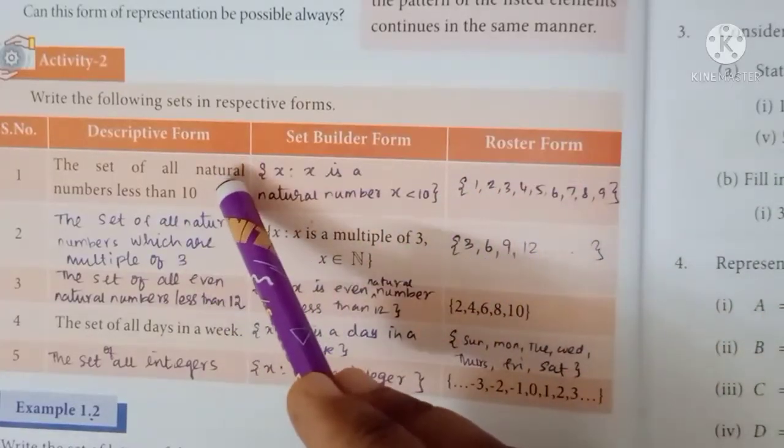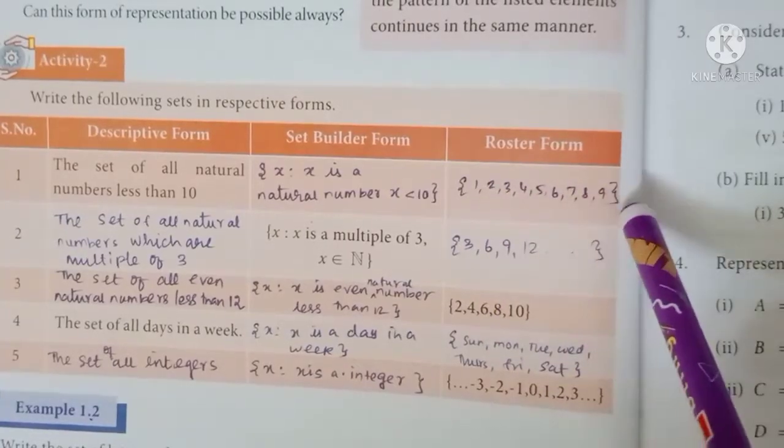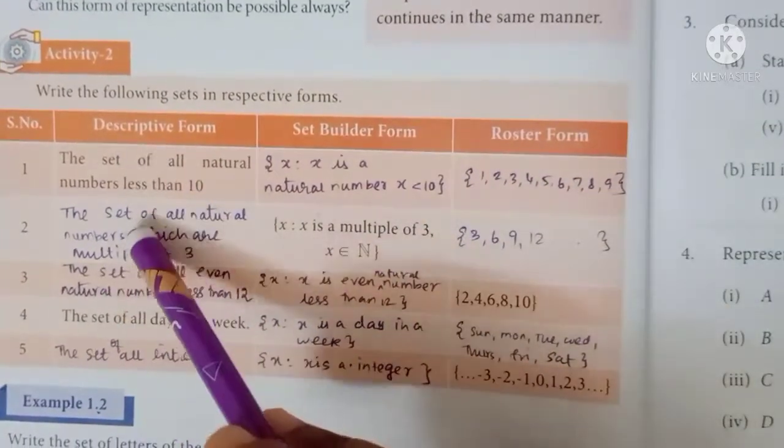So the natural numbers - less than 10 means up to 9. So: 1, 2, 3, 4, 5, 6, 7, 8, 9. Next is the descriptive form.